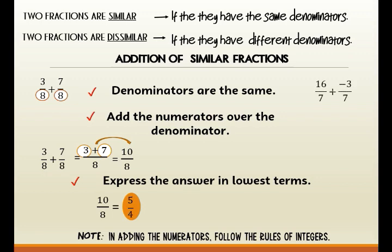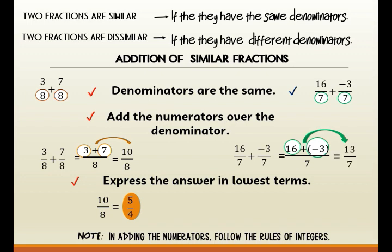The next example is 16 over 7 plus negative 3 over 7. The denominators are the same — both 7. Add the numerators over the denominator: 16 over 7 plus negative 3 over 7 can be written as 16 plus negative 3 all over 7. Since 16 and negative 3 do not have the same sign, we subtract them. 16 minus 3 is equal to 13, and that is positive because the larger number is 16, which is positive, so we use the sign of 16. We have 13 over 7, which is already in reduced form. Always take note that in adding numerators, follow the rules of integers.